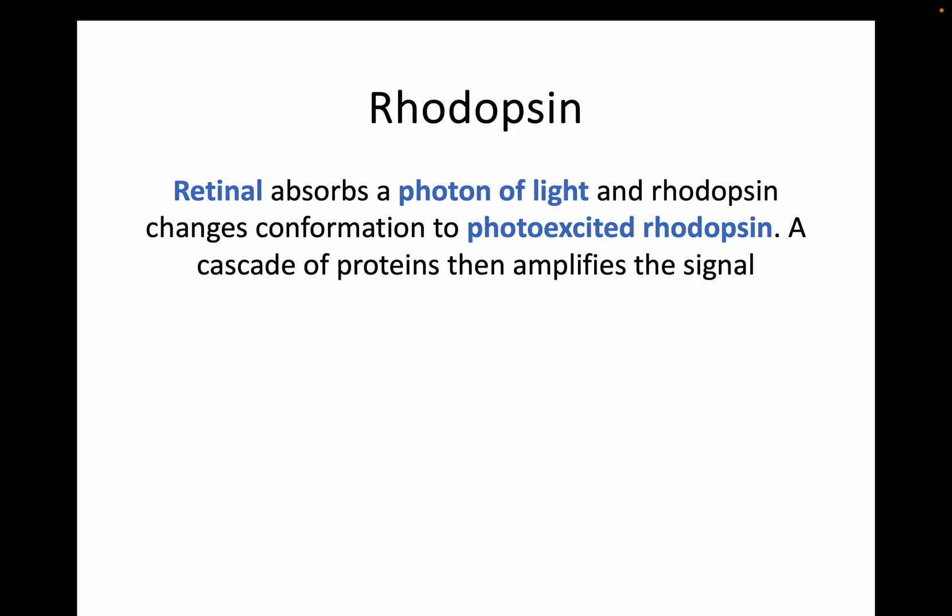Retinol is able to absorb a photon of light, and as always there's a conformational change, giving us photoexcited rhodopsin. We talked about photoexcited molecules back in Higher Biology when looking at photosynthesis — photoexcited means it has been stimulated by that light. Going back to what we've talked about previously in the key area, a cascade of proteins is then going to amplify the signal that came from that photon of light. The key point to take away is that this is all about amplification — a photon of light affects retinol, and then that rhodopsin triggers a cascade where the signal gets bigger and bigger.